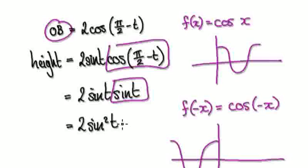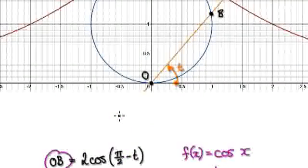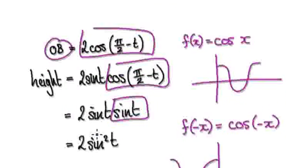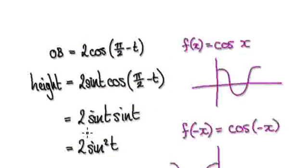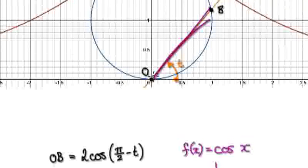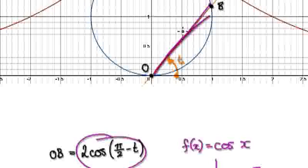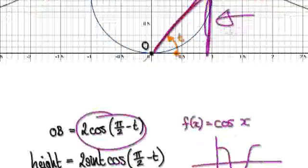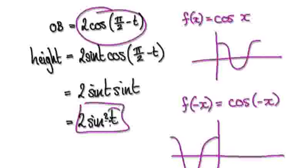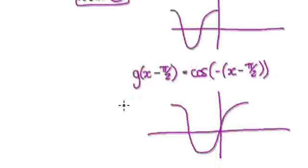So OB is given by 2cos(π/2 minus t), and the height is given by 2sin(t)cos(π/2 minus t). So now we can keep track of the height in terms of t. But now we need to keep track of the x-coordinate as t moves along.